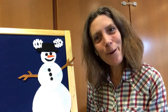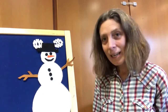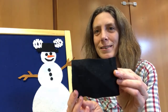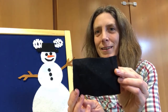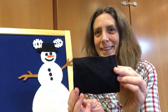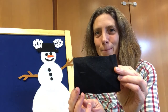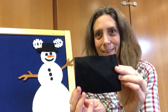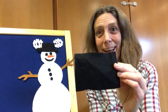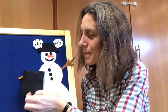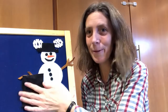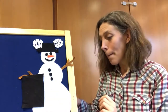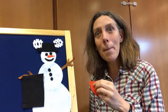Snowman, snowman, what do you see? I see a — anybody know what color this is? Black. And the shape? Rectangle. A black rectangle — that is what I see. Let's put it right here beside our snowman friend. Plop, plop, plop.